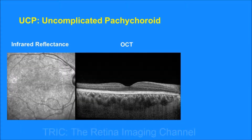This is how an uncomplicated pachychoroid looks. The OCT in this picture shows thick choroid with dilated Haller layer vessels. The infrared reflectance image of the patient is clean — it doesn't show any hypo- or hyper-reflectivity because there are no RPE alterations.